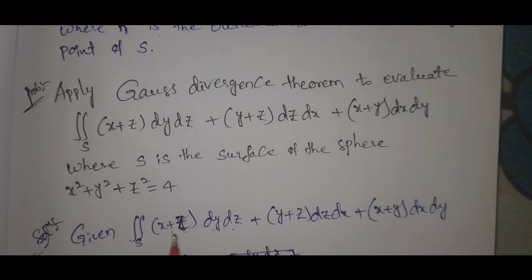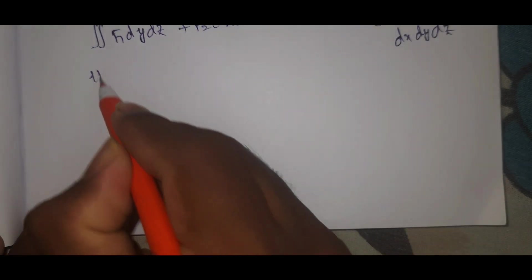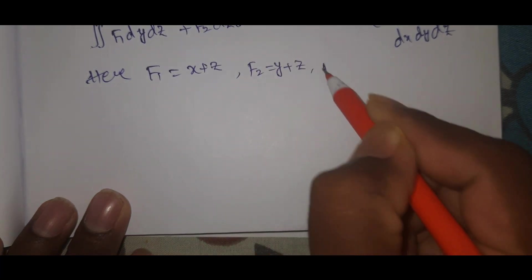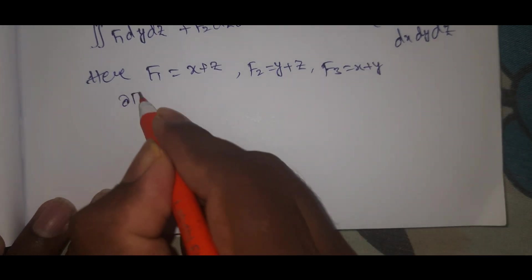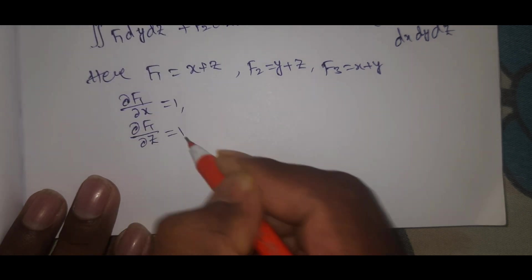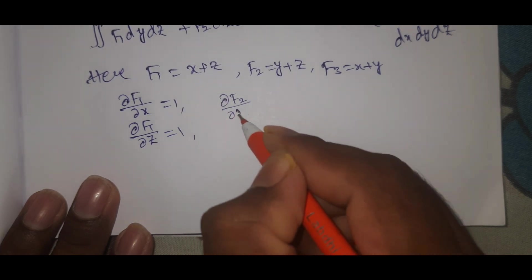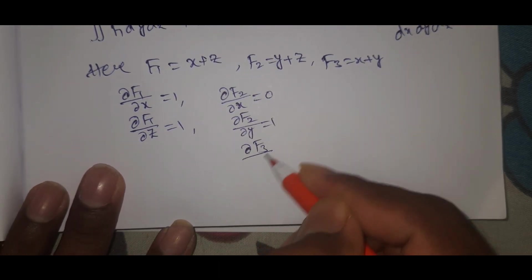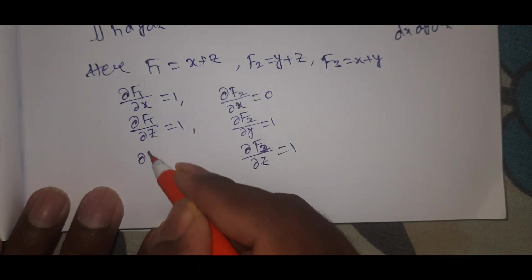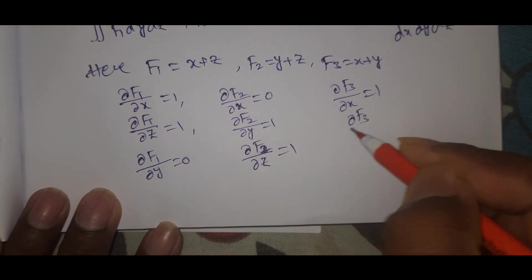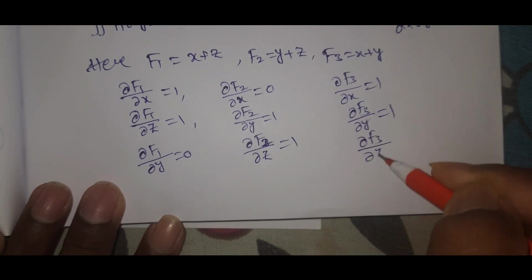Here we can see: the integral has (x plus z) dy dz, (y plus z) dz dx, and (x plus y) dx dy. So we identify: f1 equals x plus z, f2 equals y plus z, f3 equals x plus y.